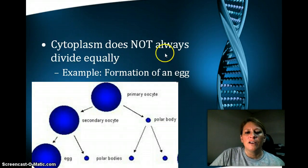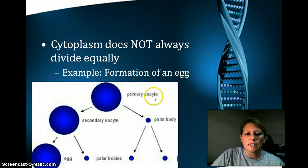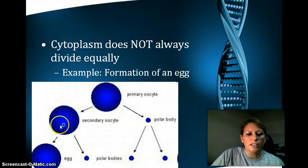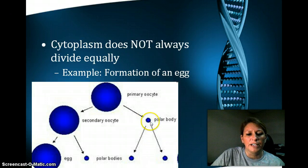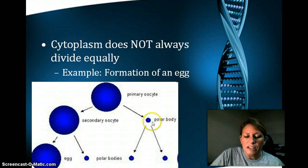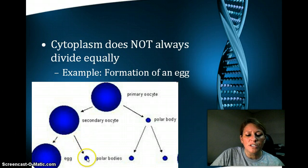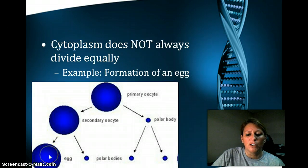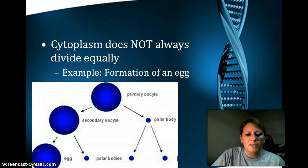For eggs, the cytoplasm does not always divide equally. Here is my primary oocyte — 'OO' refers to an egg, 'cyte' means cell. When it divides and goes through meiotic division I, you'll notice that this cell gets all of the cytoplasm, and the other cell has no cytoplasm. Those are called polar bodies. If there's no cytoplasm, there can be no genetic material inside, so those cells cannot be fertilized. When I go through meiotic division II, I have four cells, but three are polar bodies. The egg gets all of the cytoplasm and is the only one of the four that can be fertilized by the sperm.